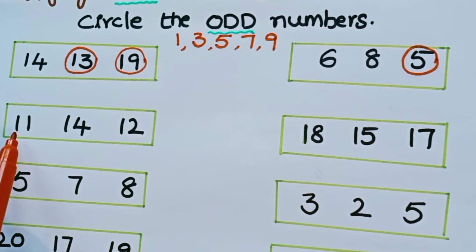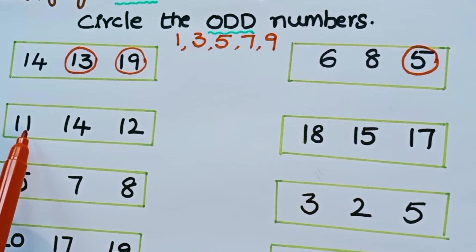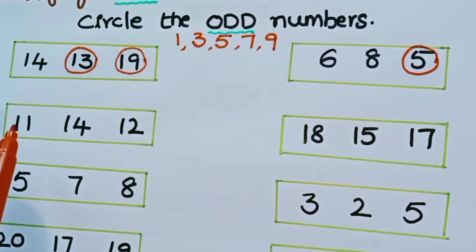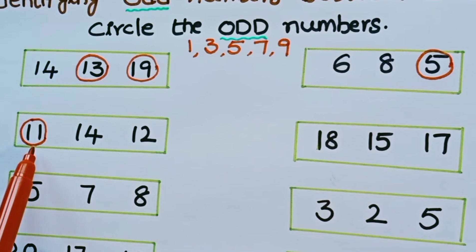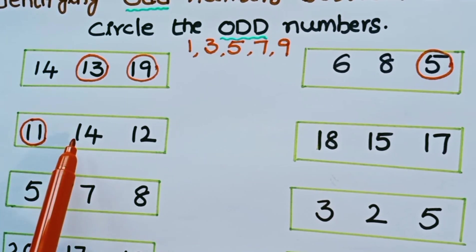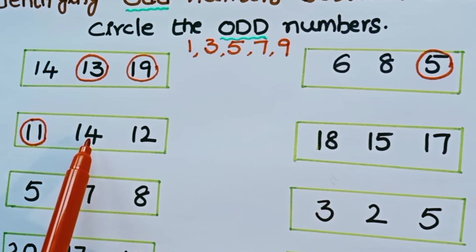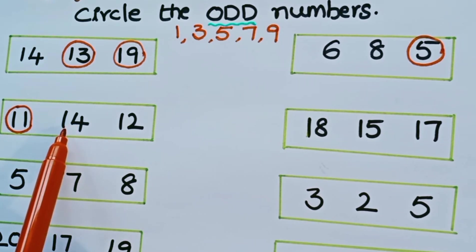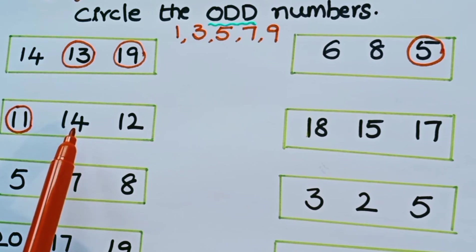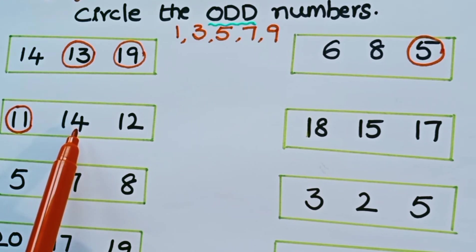Look at the next row: 11, 14, 12. Is 11 odd or even? 11 is ending with 1, so it is an odd number. Let us circle 11. Is 14 even or odd? It is an even number because 14 is ending with 4. Is 12 even or odd? It is even because 12 ends with 2.